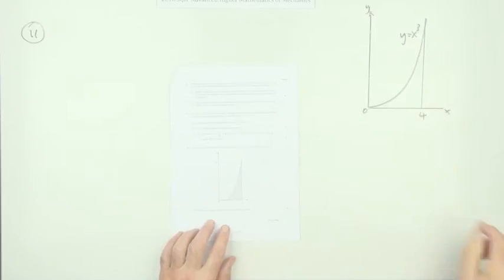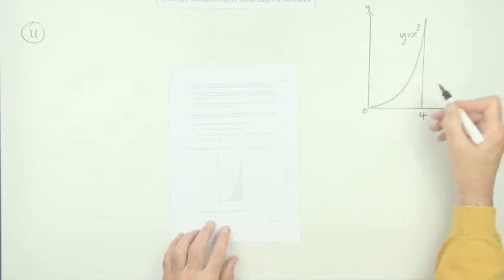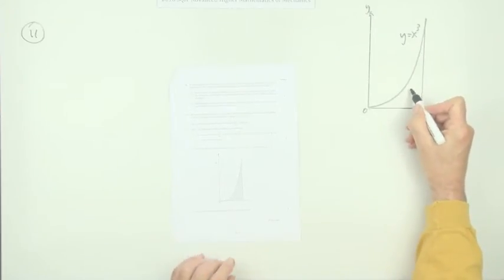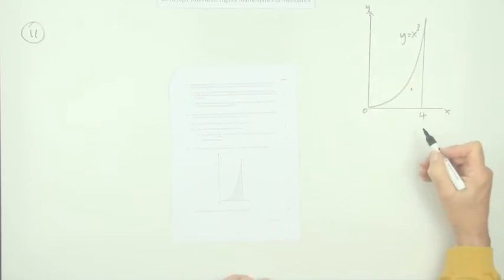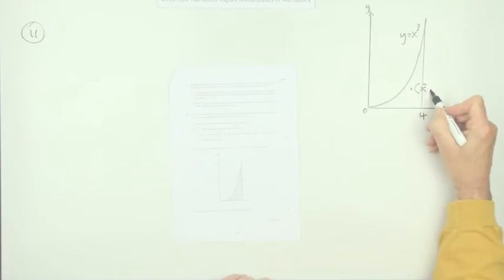So what is the center of mass of this wherever it happens to be? Where could you put a pinpoint under that to balance it? In other words, what are the coordinates x̄ and ȳ of this center of mass?